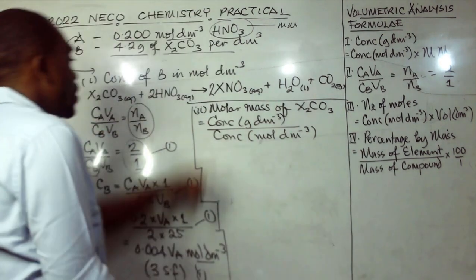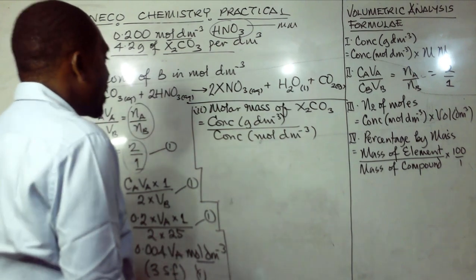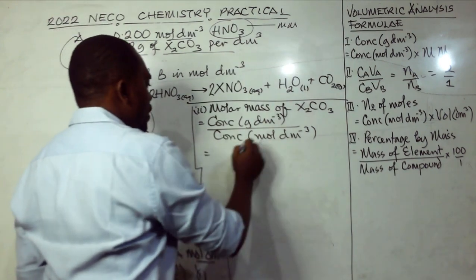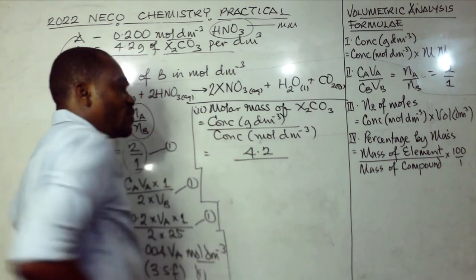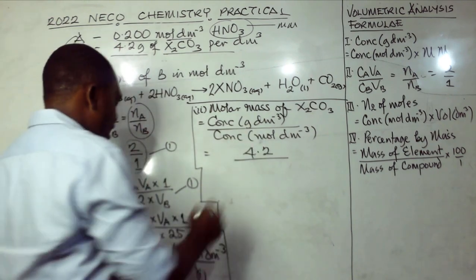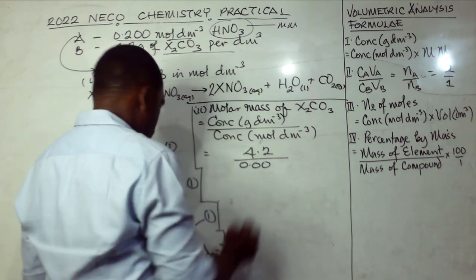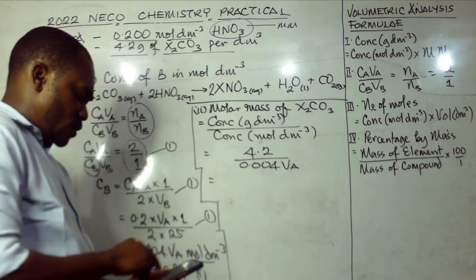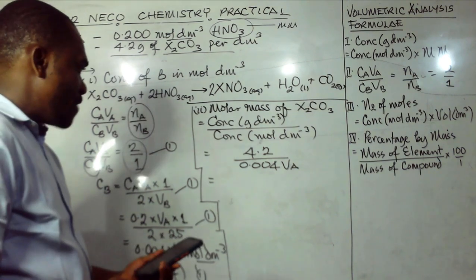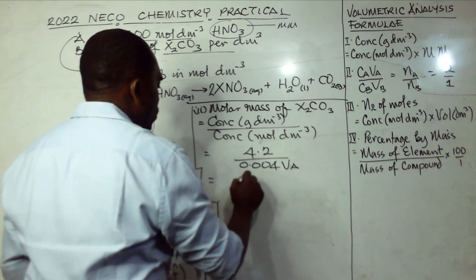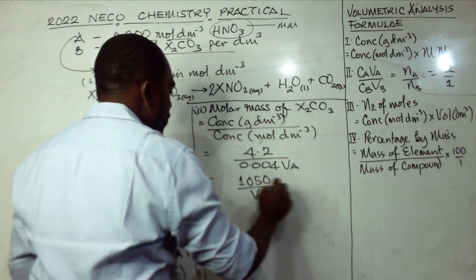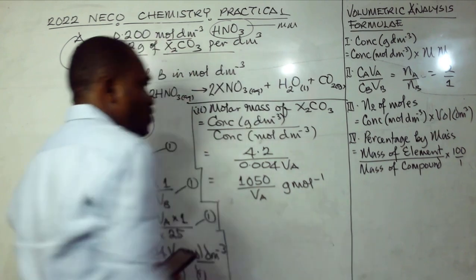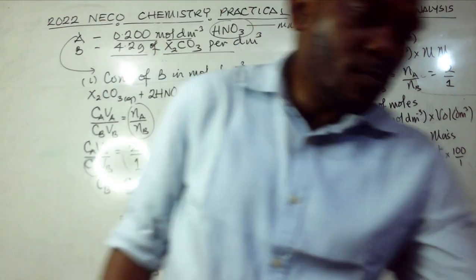The concentration of B in g/dm³ is 4.2, and the concentration in mol/dm³ is 0.004VA. So molar mass = 4.2 / (0.004VA) = 1050/VA grams per mole. The unit grams per mole is essential — you must include it since you're calculating molar mass.